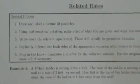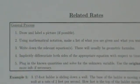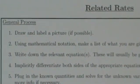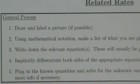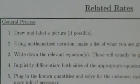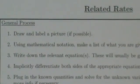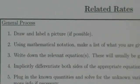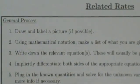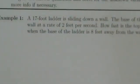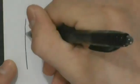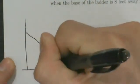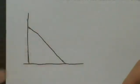Step 1 says draw and label a picture if possible. Generally, it's almost always going to be possible because related rates problems usually involve some kind of physical application where something's actually happening physically — it's not just some abstract concept. So let's draw and label a picture. We have a ladder sliding down a wall, so here's our wall, here's a ladder leaning up against it, and here's our ground.